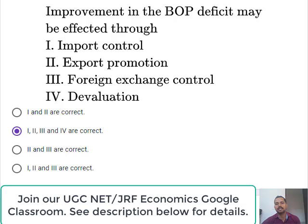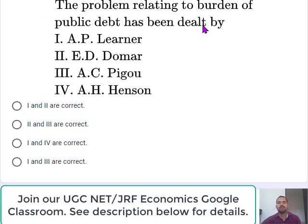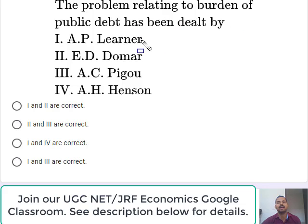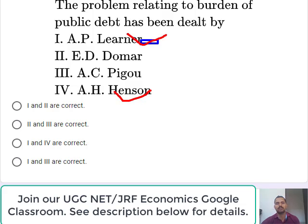The next question is one of the most controversial in NET/JRF economics. You simply need to memorize that the problem relating to the burden of public debt has been dealt with by A.P. Lerner and A.H. Hansen. There is nothing to explain here — just memorize this, because there are always things that need to be memorized.